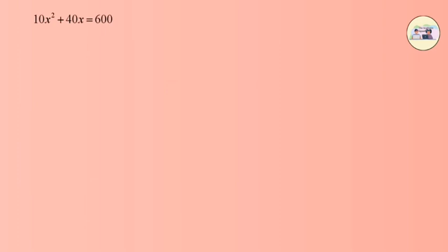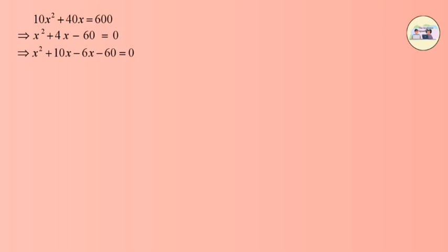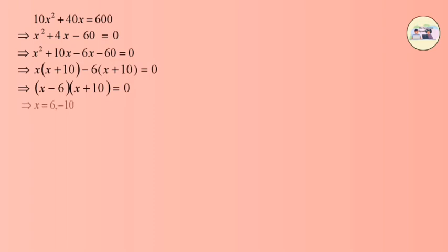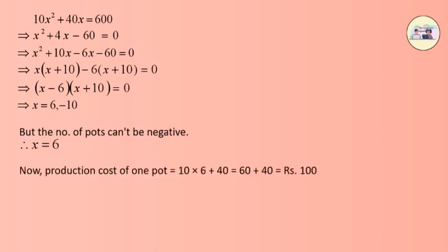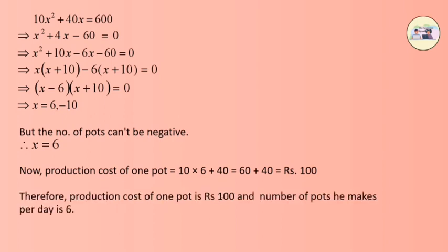Multiplying gives 10x² + 40x = 600. Taking 600 to the left side and dividing the whole equation by 10, we get x² + 4x − 60 = 0. Splitting 4x, we get x² + 10x − 6x − 60 = 0. After solving, we get x = 6 or x = −10. Since the number of pots cannot be negative, x = 6. Production cost of one pot = 10 × 6 + 40 = rupees 100. So the solution is: production cost of one pot is rupees 100 and number of pots per day is 6.